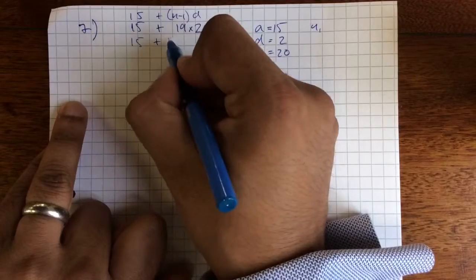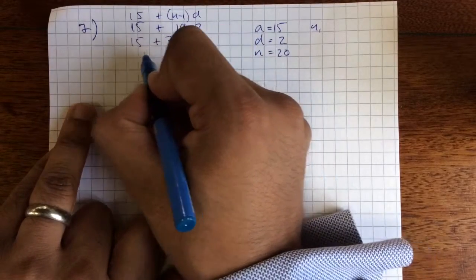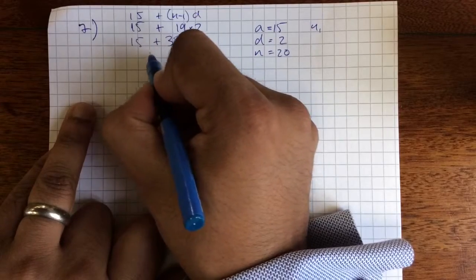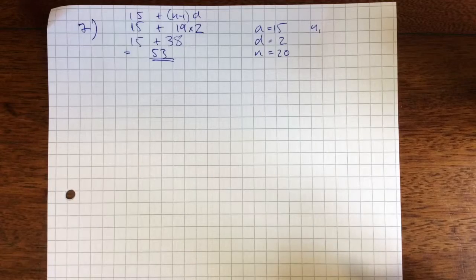Right, so 15 plus 19 times 2, that's 15 plus... 19 times 2 is 38, 15, 38, that's 48, 53. So, equals 53. Alright, that wasn't very hard.